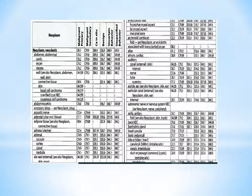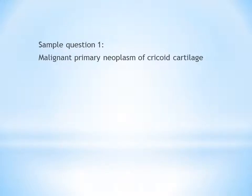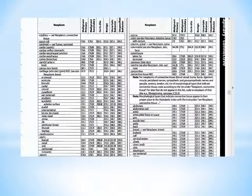Now let's do some sample questions. Take your ICD book, go to the table of neoplasm, and start. First question: malignant primary neoplasm of cricoid cartilage. Identify the type of neoplasm and the structure affected, then search the code. The structure affected is cricoid cartilage and the neoplasm is malignant primary. Go to cartilage — you can see types like arytenoid, auricular, bronchi, costal — then go to cricoid. Malignant primary is the first code, so the answer is C32.3.